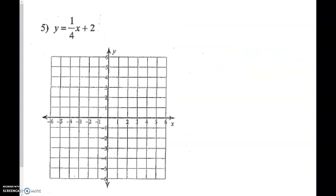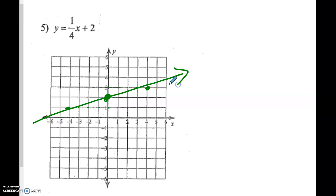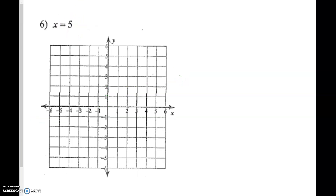Number 5: my y-intercept is plus 2. I'm going to go up 1 and right 4, or down 1 and left 4. Connect them. Do you see how it has a positive slant, as the slope is a positive number?